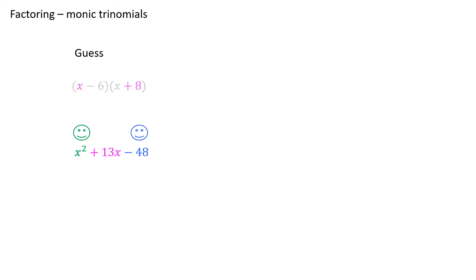So watch as I try that. The outer product would be 8x. The inner product would be negative 6x, which brings us back to the question, did these terms combine to make 13x? Well, no, they don't. 8x minus 6x is not 13x. And that tells me that my second guess was also wrong, and I therefore have to guess again.